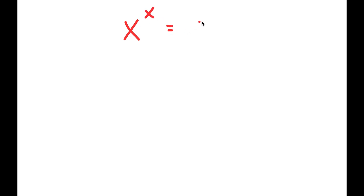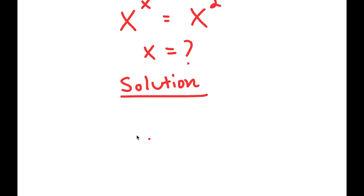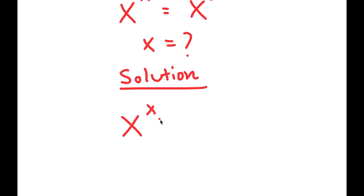All right, so in this problem I have x to the power of x is equal to x to the power of 2. I want to find the value of x here. For my solution, start by writing this as x to the power of x is equal to x to the power of 2.